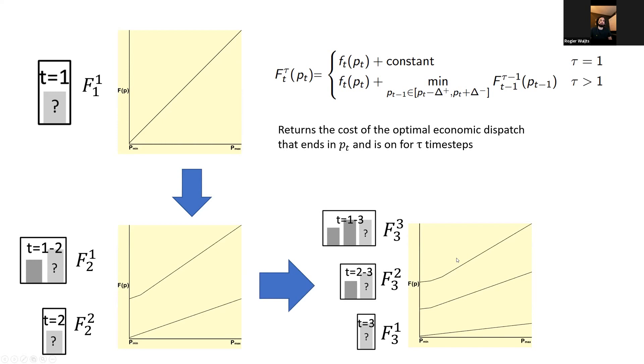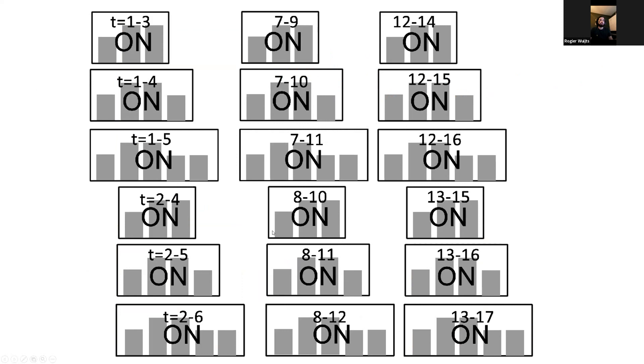We want to define a function that takes as input a certain power output level and returns the cost of the optimal economic dispatch that ends in that particular power output level and is on for tau time steps. We want to do it for every possible time step and possible length of the schedule. This is a recurrence relation that we can inductively build. We first start by being on at time step one for one time step. This results in a cost function with some constants for startup cost. Then using this information, we can build the schedule where it's on for time steps one and two, but you can also start up in time step two. This iterative building uses a sliding window minimum over the previous function to respect the ramp up limits.